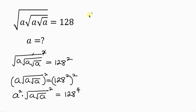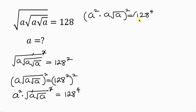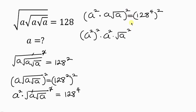On the left we have A squared times A squared. Now this square cancels out the square root, leaving behind what we have inside the square root, which is A times the square root of A, to be equal to 128 to the power of 4. Now let's get rid of this last square root by also taking the square of both sides.